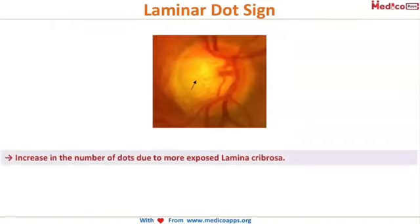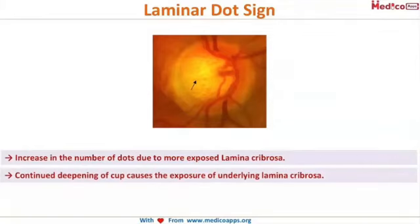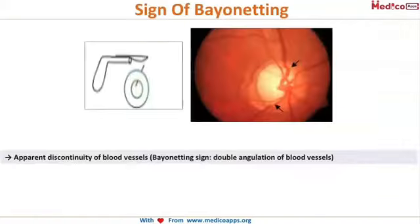The lamina dot sign is an increase in the number of dots appearing in the optic disc due to more exposed lamina cribrosa. There is continued deepening of the cup which causes exposure of the underlying lamina cribrosa, recognized by the gray fenestrae of the lamina on ophthalmoscopic examination.